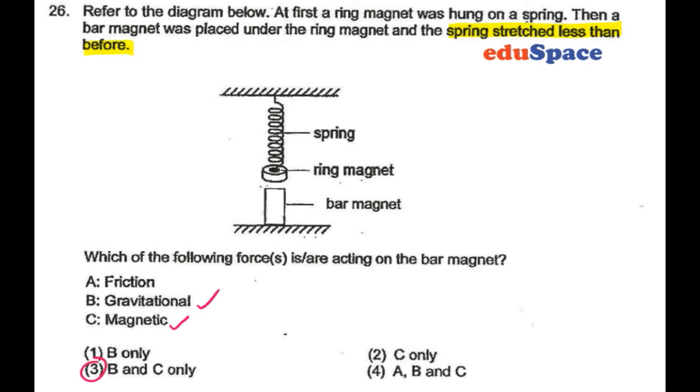Magnetic force simply because the bar magnet and ring magnet, when they're placed near each other in this case, the spring stretches less than before. That must mean these two are repelling away from each other.